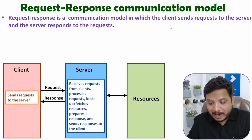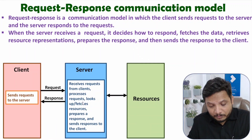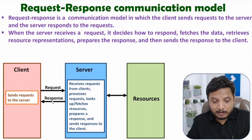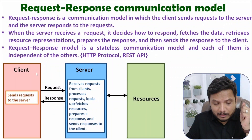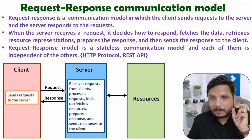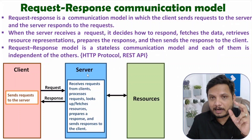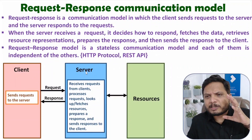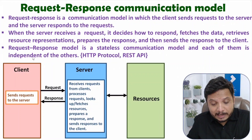In the request-response model, client sends a request to the server and the server responds to the request. When the server receives the request, it decides how to respond — it will fetch the data and retrieve resource representations, then send the response to the client. This request-response model is stateless, meaning the server serves all requests independently. The server is not storing any history of the client, and the client is not storing any history of the server — both are independent of each other.